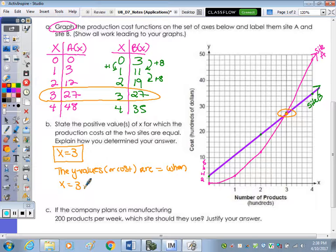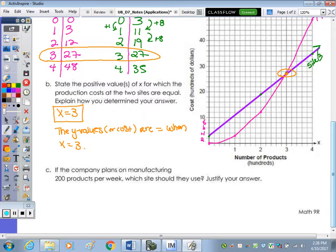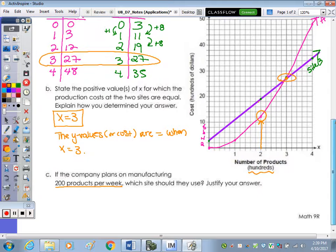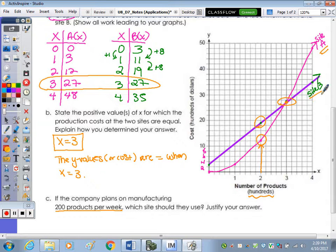Last part. If the company plans on manufacturing 200 products per week, which site should you use? Should you use site A or site B? If they plan on manufacturing 200 products per week. If you go over to the graph, here's the number of products. Again, we're in terms of hundreds. So this is your 200. So should they use site B or, I'm sorry, that's A.